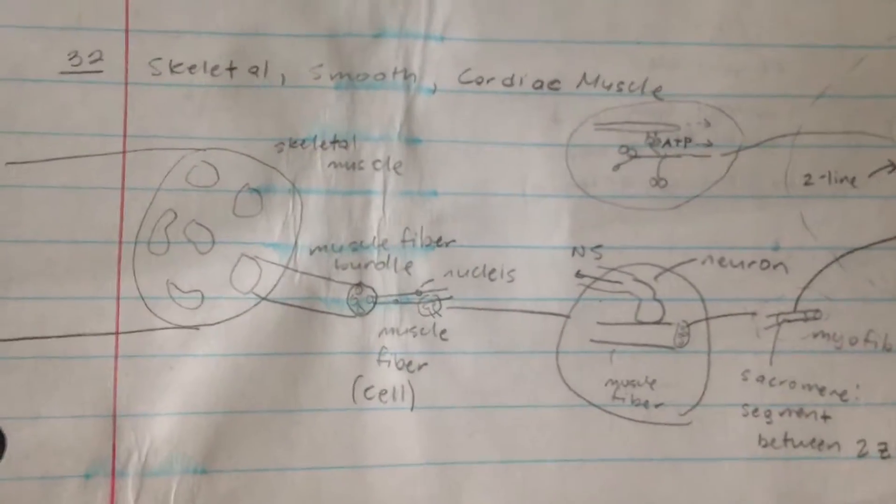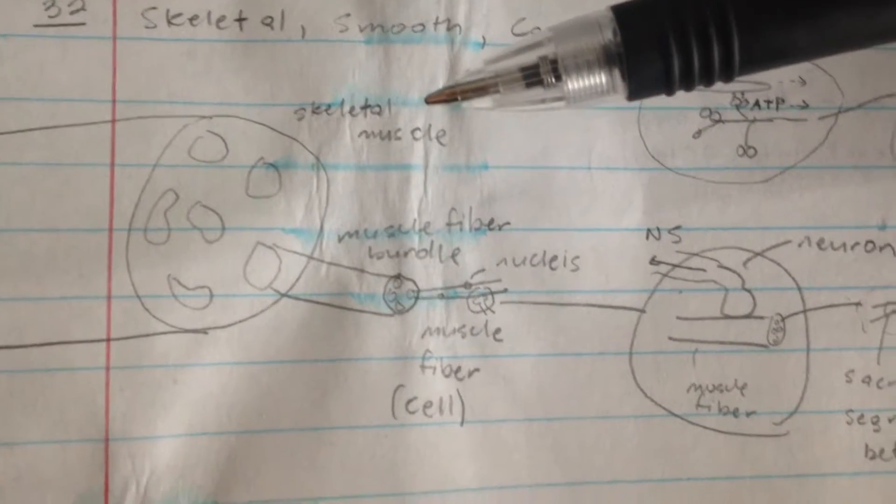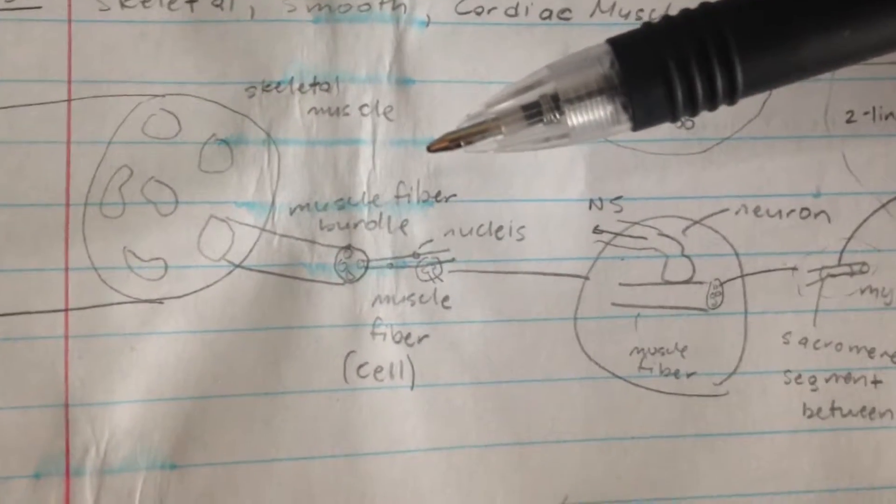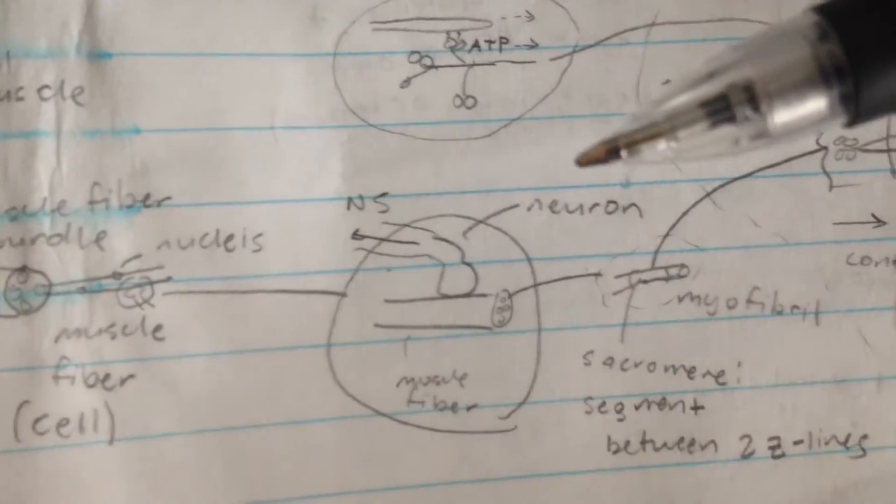Alright, so we'll see how that works. We have a skeletal muscle here, which is made out of muscle fiber bundles, which are then made out of muscle fibers. Let's take a closer look at the muscle fiber.